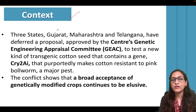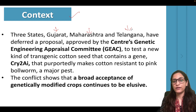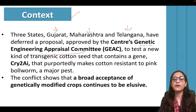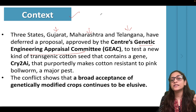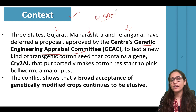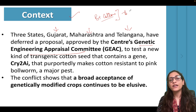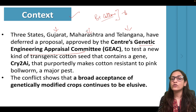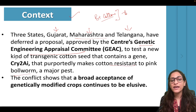There are three states — Gujarat, Maharashtra, and Telangana — that have made a proposal to the Genetic Engineering Appraisal Committee (GEAC). GEAC has also approved that there is a new transgenic cotton seed which needs to be tested. This is cry2Ai cotton, which makes cotton resistant to the pink bollworm — a major pest.